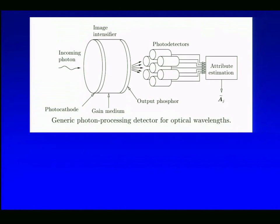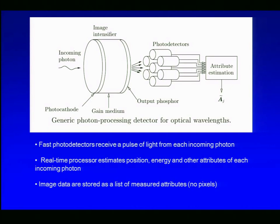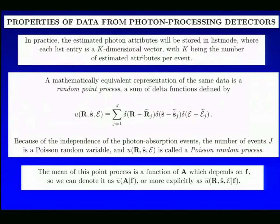And we can push that idea still further by the photon processing detectors, which looks something like this. You have an incoming photon. You have an image intensifier and phosphor. And now you have a whole series of photo detectors which respond rapidly and produce a pulse for each absorbed event. And then you have a processor that estimates not only position as in the previous slide, but energy, even direction, other attributes of the incoming photon. And those estimates are the image data that are stored as a list of measured attributes. Attributes are properties of the photon absorption events. Once again, no pixels. These are continuous devices.